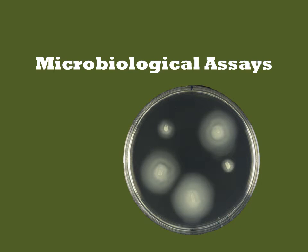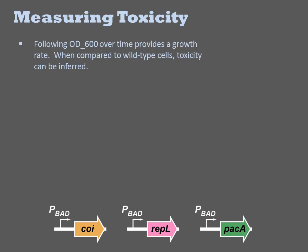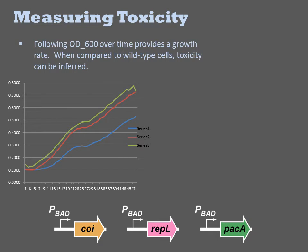Microbiological assays are whole cell assays that monitor some non-chemical process in the cell. Cell growth is one such phenomenon. By measuring optical density as absorbance at 600 nm, you can follow the growth of a cell culture over time. The first derivative of this trace is the growth rate.